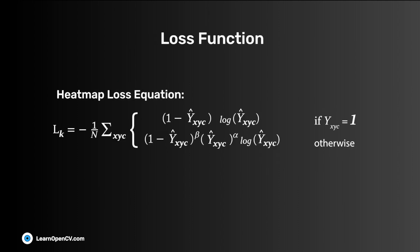This is the heatmap loss equation. Here, n is the number of bounding boxes. Hence, the heatmap loss is averaged over the number of bounding boxes. The equation is made of two parts. The loss function acts as focal loss at the bounding box center.